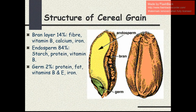This is the structure of cereal grains. It consists of 3 main parts. The first one is the bran layer. The bran layer constitutes about 14% in whole grains. It contains fiber, vitamin B, calcium and iron. The endosperm consists of about 84%. It contains starch, protein and vitamin B. The next one is the germ part. It consists of 2% in cereal grains. It contains protein, fat, vitamin B and E.